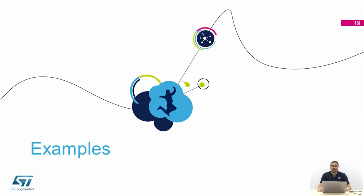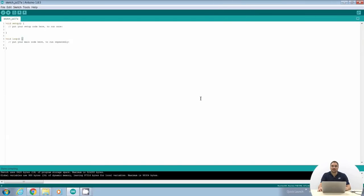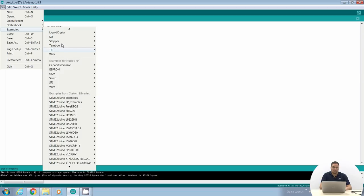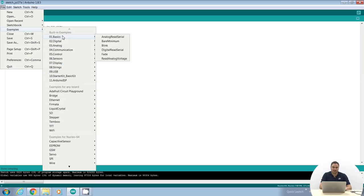I will show you three examples. The first example is based on the Nucleo F401 and demonstrates the blinking LED. The second example is based on the Nucleo F401 plus the MEMS expansion board. The third example is based on the Discovery IoT node using the onboard proximity sensor. To load the blink example, go to File, Examples, Basics, Blink.